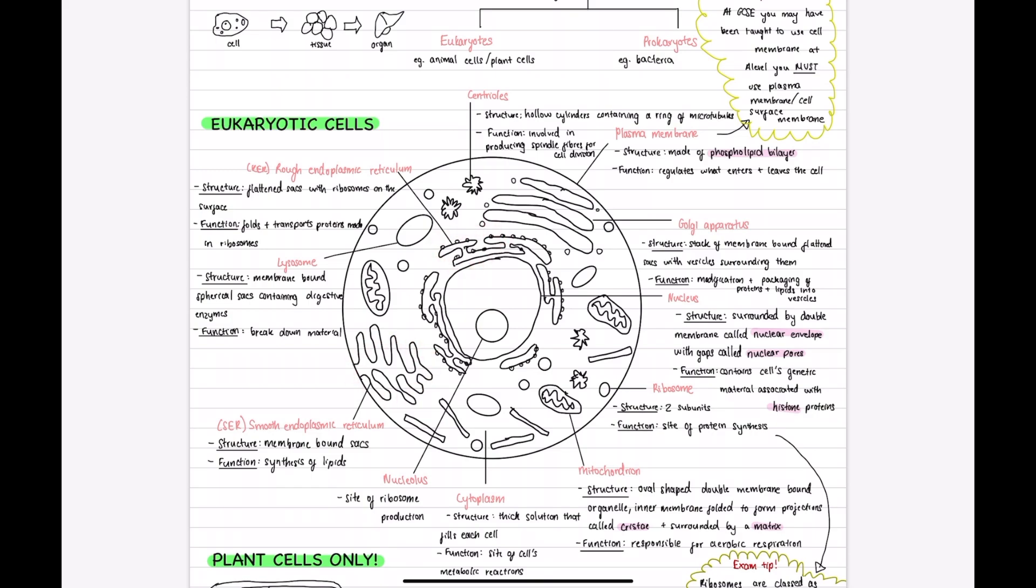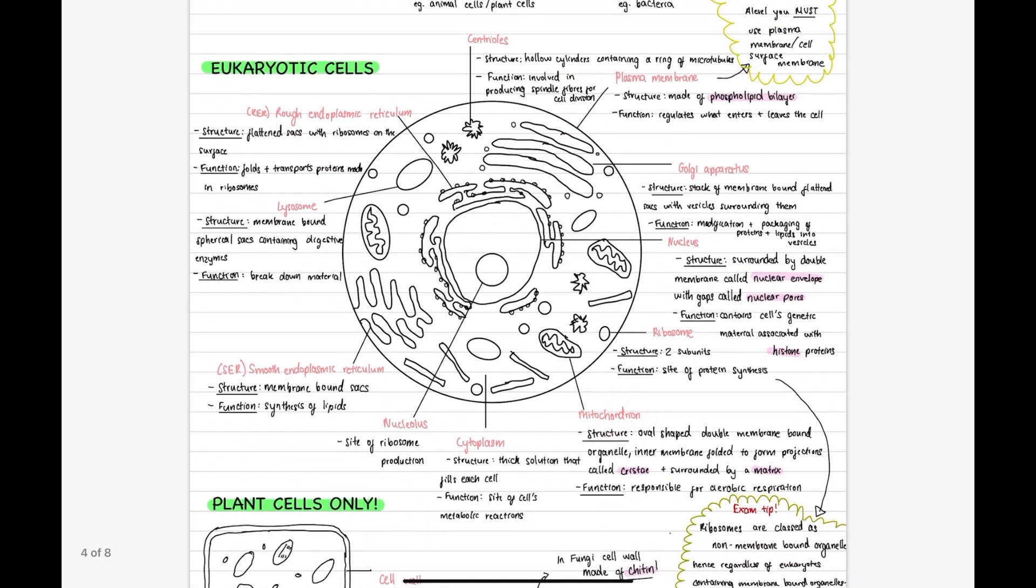The lysosomes are membrane-bound spherical sacs containing digestive enzymes which are used to break down material. The mitochondrion is an oval-shaped double membrane-bound organelle. The inner membrane is folded to form projections called cristae and surrounded by a matrix. This is the site of aerobic respiration.